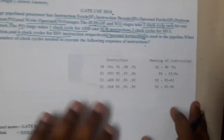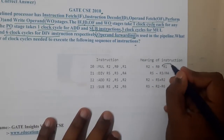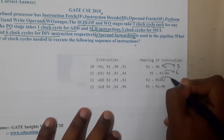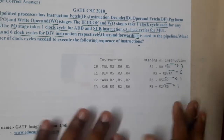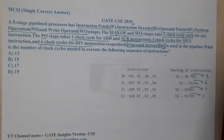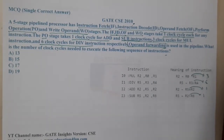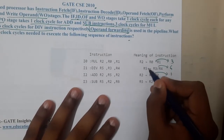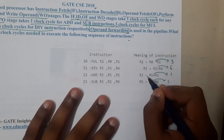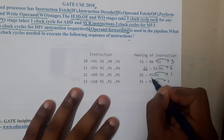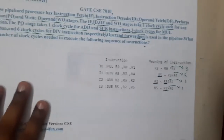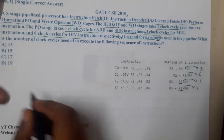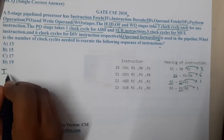We need to find the number of clocks to execute a given sequence of instructions. Multiplication takes 3 clocks, division takes 6, addition takes 1, subtraction takes 1. This is a data dependency question. R2 has no issue, but R5 appears in two instructions creating a dependency, and R2 also appears in two instructions creating another dependency.